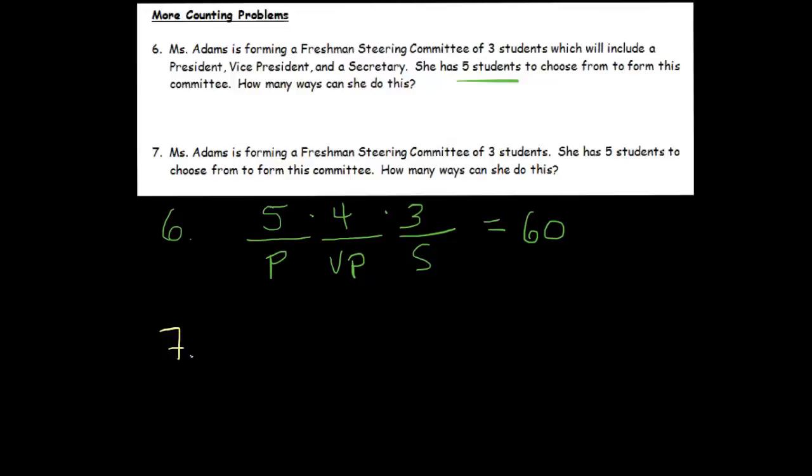What makes this problem a little more complicated when you compare it to six is that we're not choosing a president, a vice president, and a secretary. I can't really do this whole slots business because we're just forming three people and there's nothing really special about those people. I can't really line them up in any special way. I just need to pick three of them. So we need to view this in a different way.